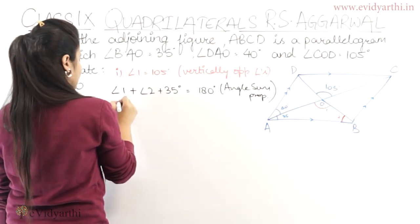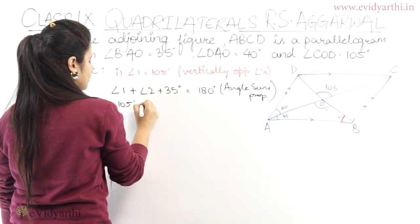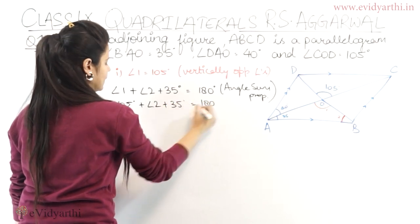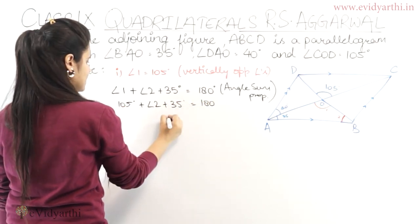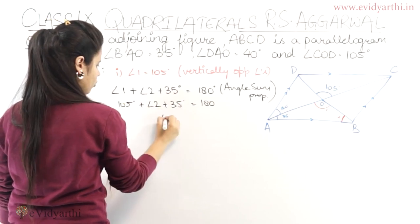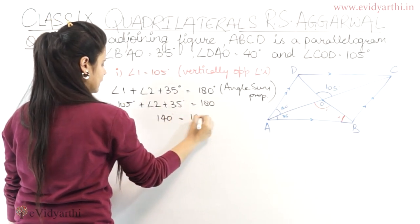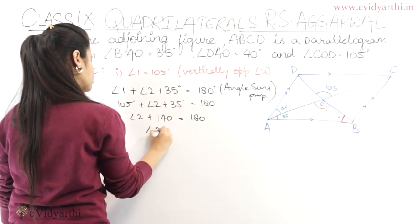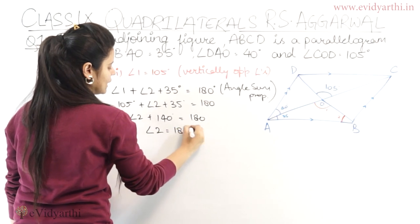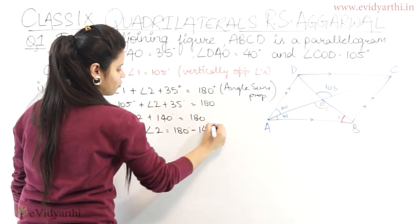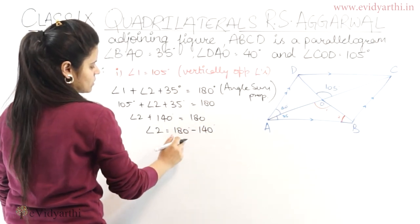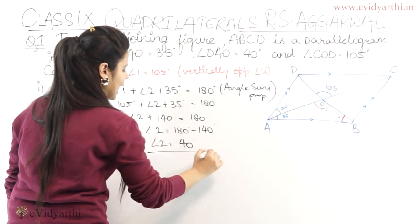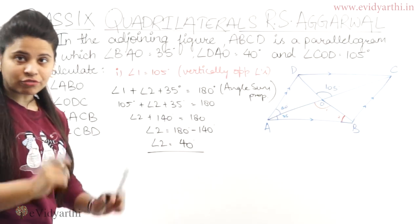So here angle 1 is 105 degrees plus angle 2 plus 35 equals 180. So here 5 plus 5 is 10, 3 plus 1 is 4, and then 140 plus angle 2 equals 180. Angle 2 equals 180 degrees minus 140 degrees, so this will be 40 degrees. Therefore, angle 2 is 40 degrees.